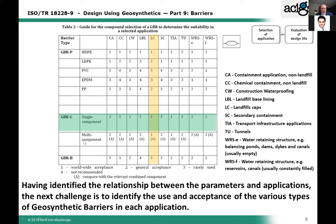Then we have multi-component materials — materials manufactured from two different components — such as a multi-component geosynthetic clay liner. And then there are GBRB materials, which are the bituminous materials. They typically find their application in direct contact with water. Once chemicals are involved, they move to rarely used, generally accepted, or not recommended categories. These are topics you as a designer have to check, gathering your data and using this guide as the first step.